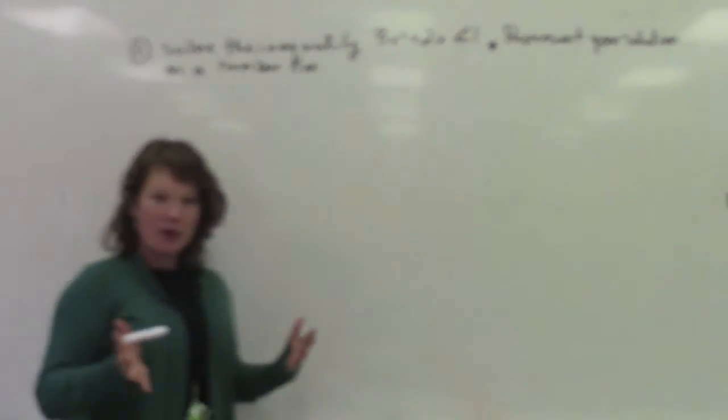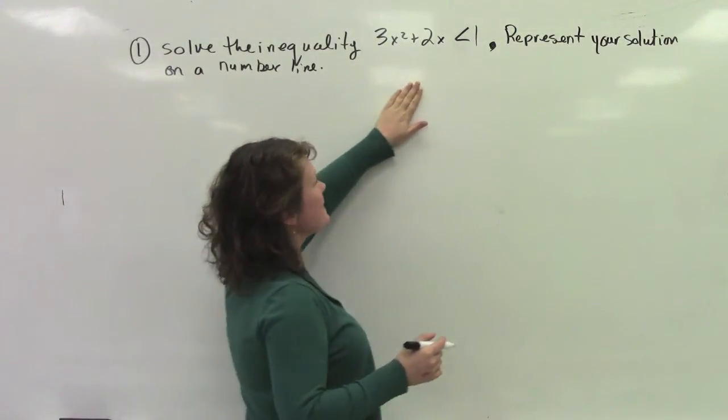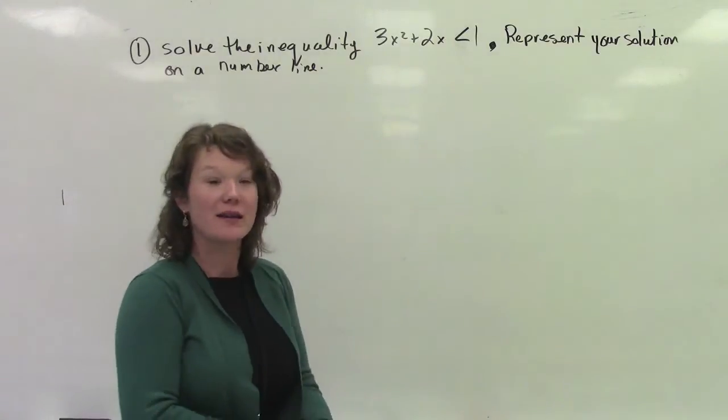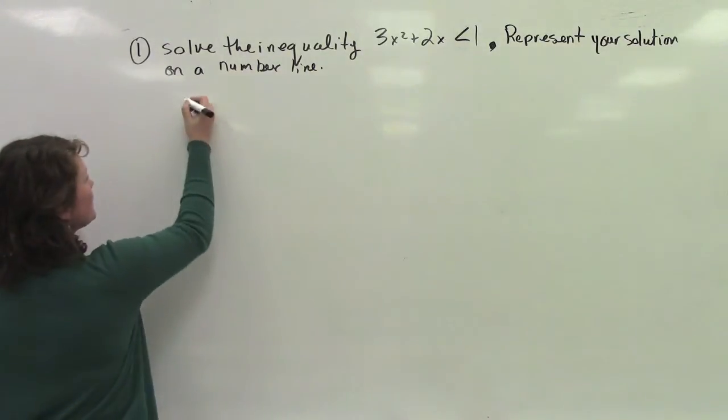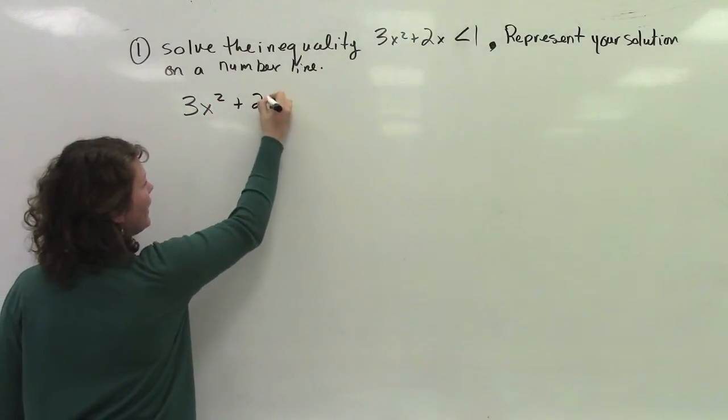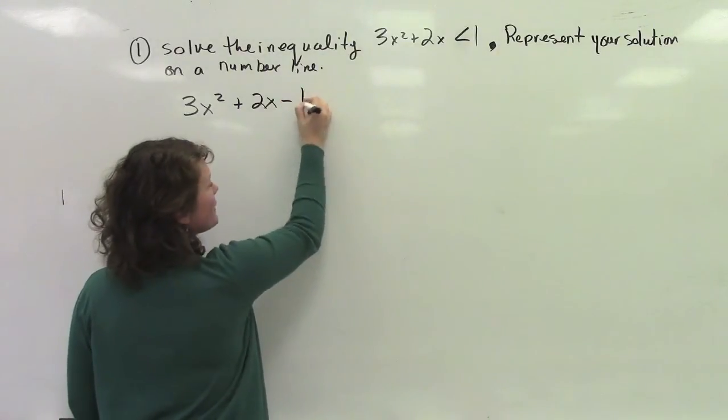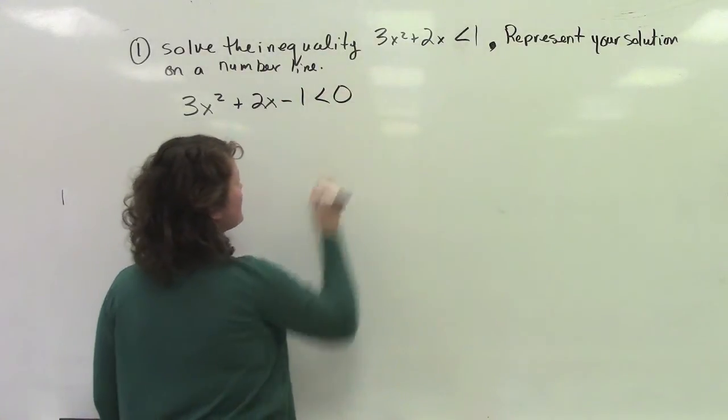So what we want to do first is we want to make sure that we set this thing greater than or less than 0. So we say 3x squared plus 2x, and I want to subtract 1 from both sides, minus 1 is less than 0.